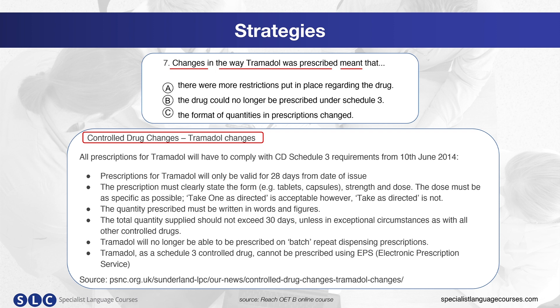Looking at the first option: there were more restrictions put in place regarding the drug. We are looking for information that supports an increase in the restrictions put in place. Option B says the drug could no longer be prescribed under Schedule 3 — this is more specific than option A, and you will need to find information that supports this change for it to be correct. Finally, option C states the format of quantities in the prescriptions changed, referring specifically to the format of the quantities in the prescriptions.